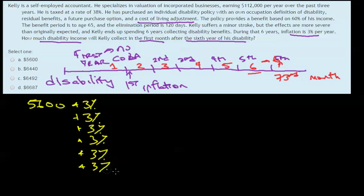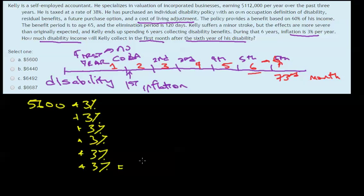Of course, if you had a financial calculator you would have an easier time with this — you could run through the time value of money functions, or if you had a calculator other than what the LLQP allows, you could do 5,600 times 1.03 to the power of 6. But if you just do 5,600 plus 3% — or times 1.03 — six times, you'll get to your correct answer which is $6,687.